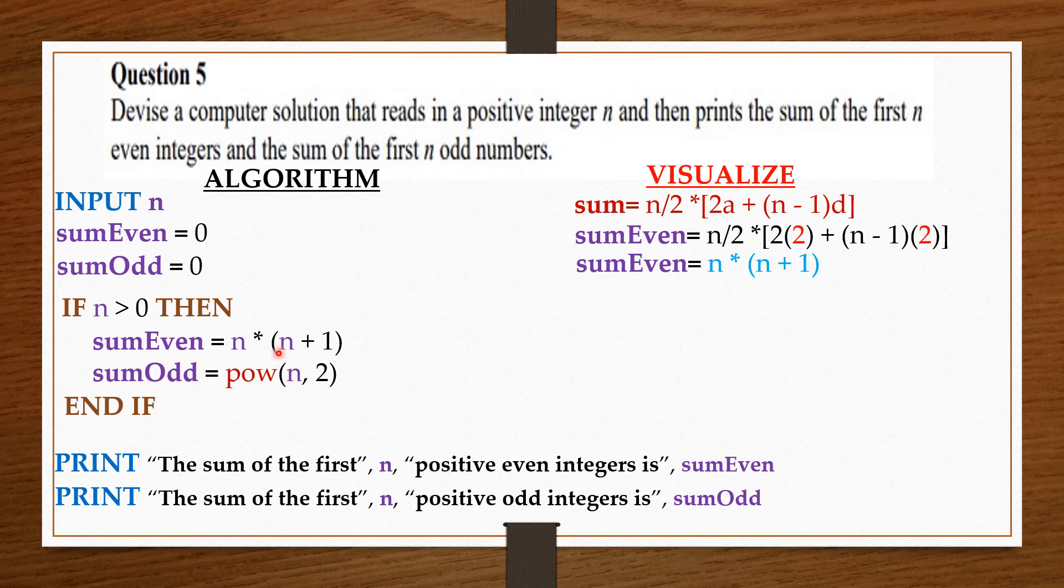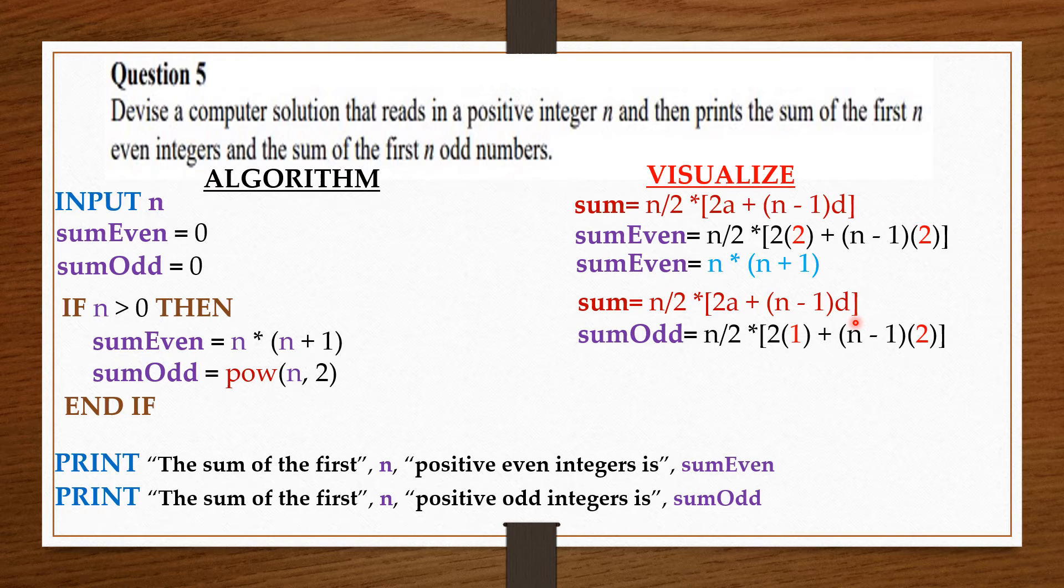The same for odd numbers. Now I insert: the first term of odd numbers is 1 and the common difference is 2. So when I insert it into the formula and simplify, I'm going to get n times n, which is the same as n to the power 2.